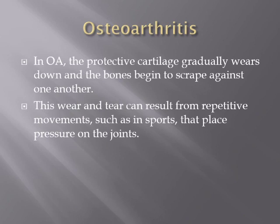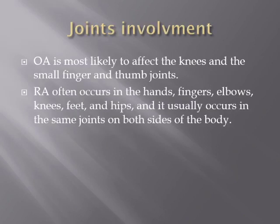This wear and tear can result from repetitive movement, such as sports that place pressure on the joints. Osteoarthritis most commonly affects the knees and small finger and thumb joints, while rheumatoid arthritis often occurs in the hands, fingers, elbows, knees, feet, and hips, and usually occurs in the same joints on both sides of the body.